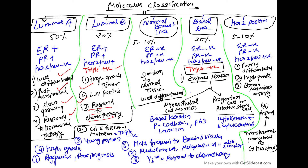Normal breast-like is seen in 5 to 10% of cases. It is ER-positive, PR-positive, HER2-neu negative — similar to normal tissue — and is a well-differentiated tumor.